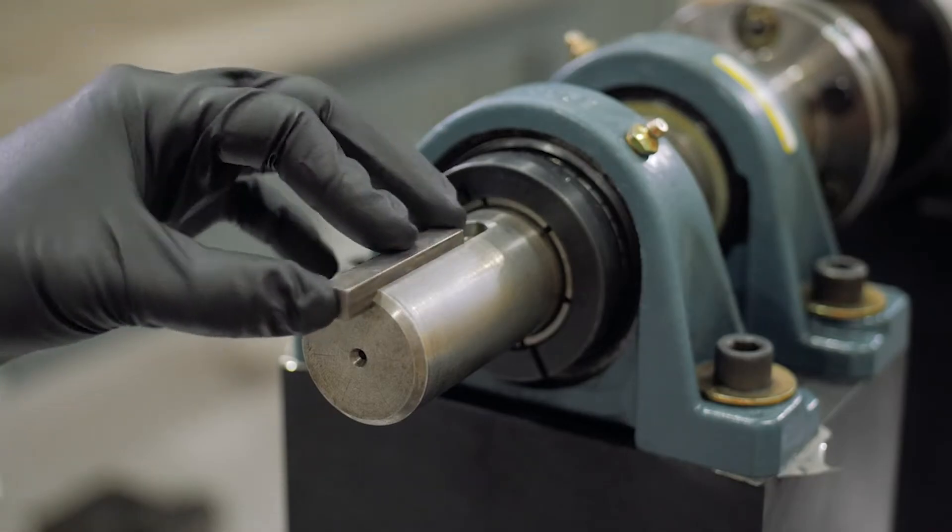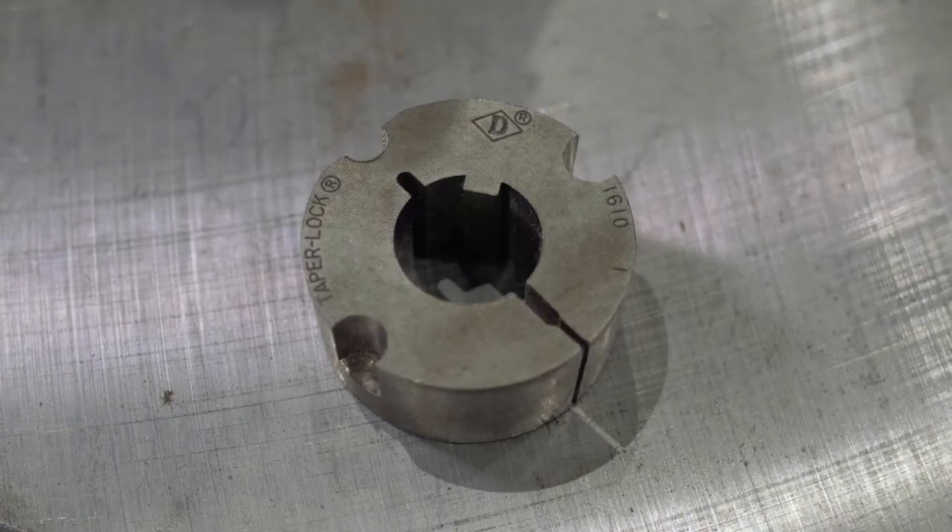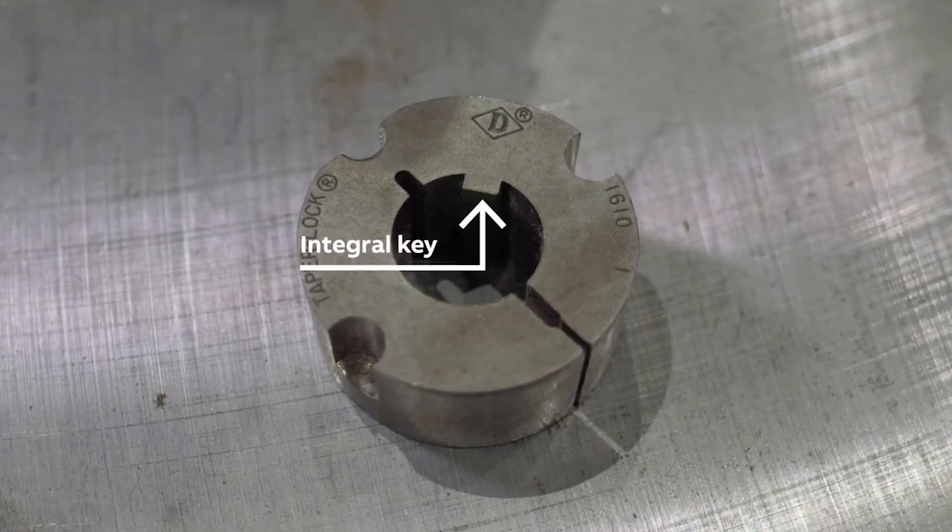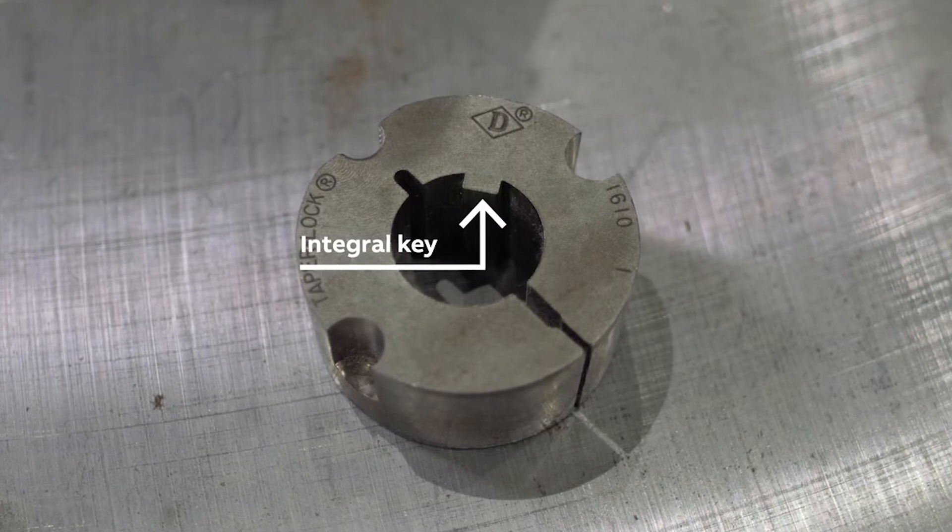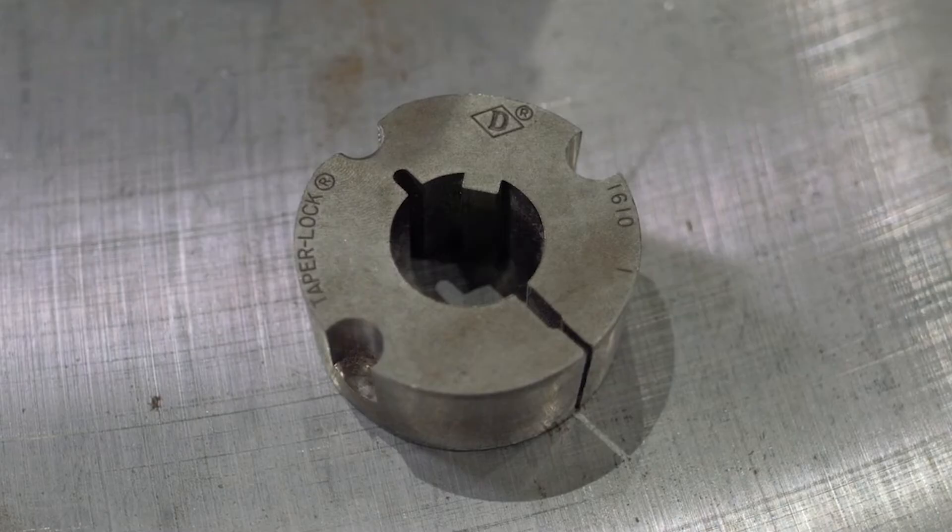If using a standard taper lock bushing, install the key. Dodge also offers taper lock bushings with an integral key. Integral key taper lock bushings have the key preformed directly into the bushing for easier and faster installation.